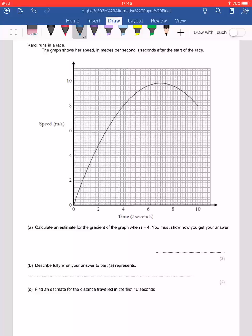Hello people, we meet again for the penultimate time to work out this speed-distance-time graph. We've got Carol who runs in a race. The graph shows her speed in meters per second, t seconds after the start of the race. We want to work out an estimate for the gradient of the graph when t equals 4.